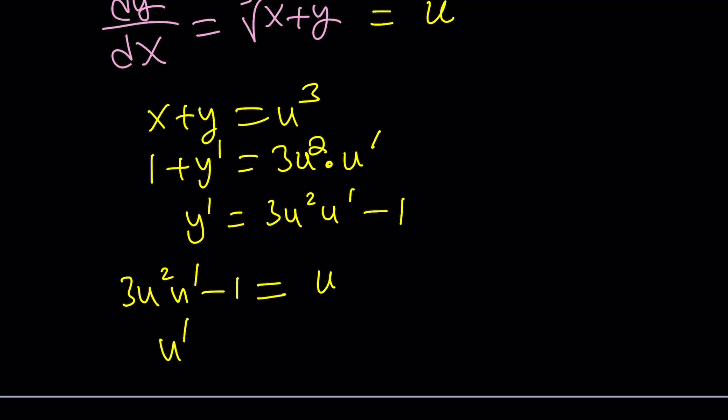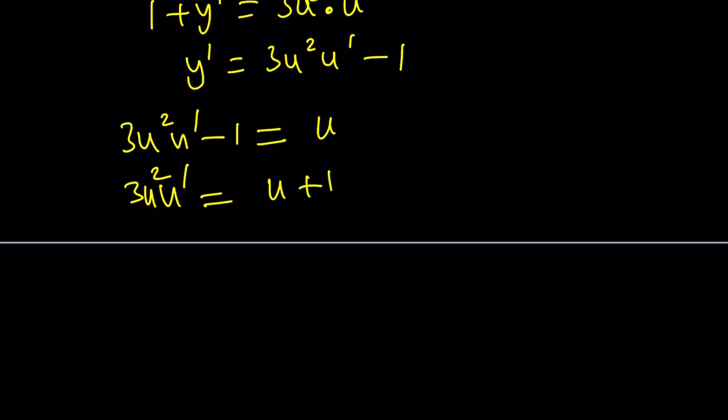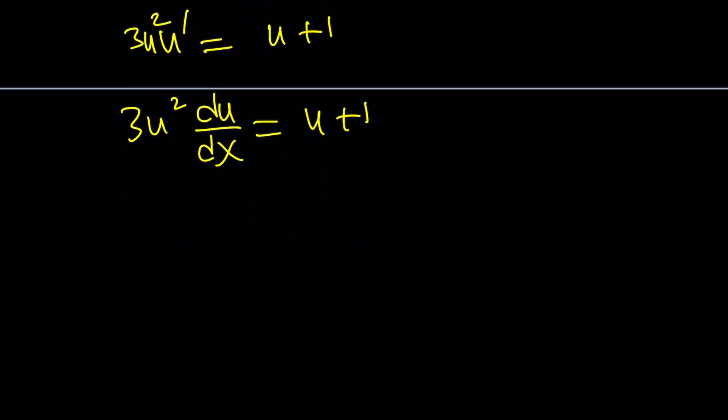And then, by replacing it, you get 3u squared u' minus 1 equals the cube root of x plus y, which is u in this case. Add 1 to both sides and then divide by 3u squared. And you're going to get something very similar. But to solve this problem, oh, by the way, you first need to replace u' with du/dx. And you're going to divide by u plus 1. So you're going to get something like 3u squared over u plus 1. I hope that looks familiar. And you're going to get the exact same results.